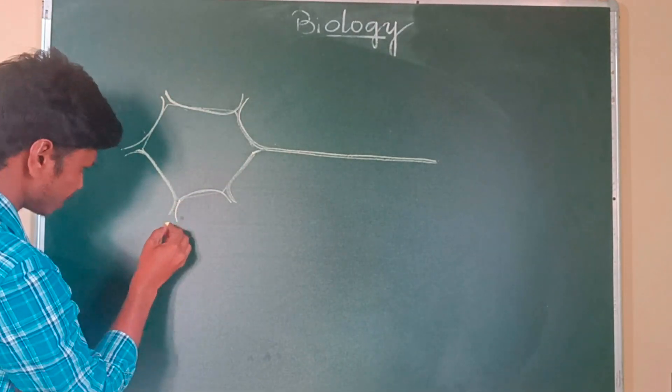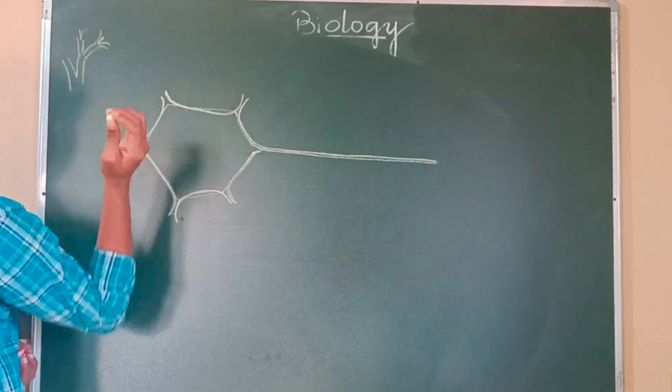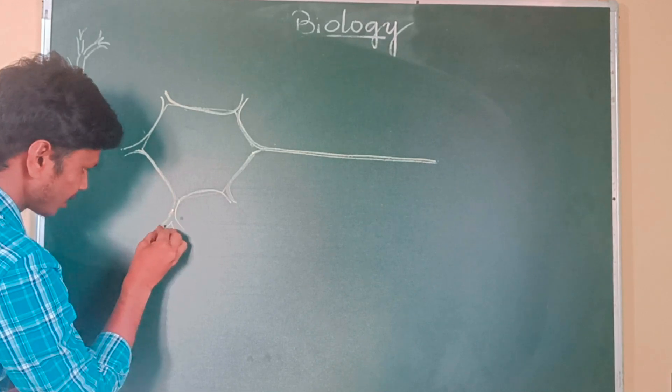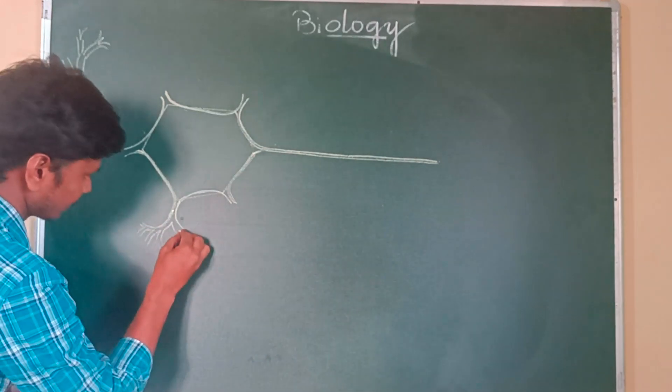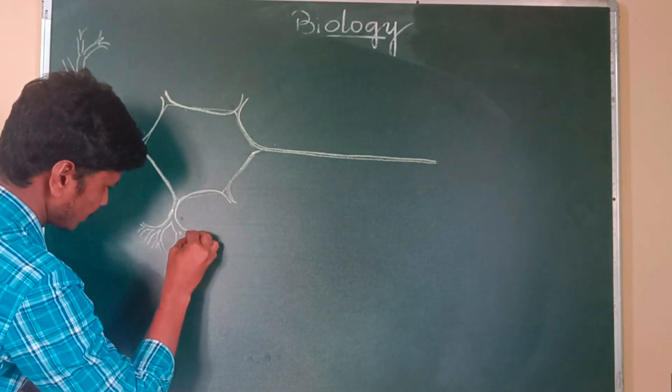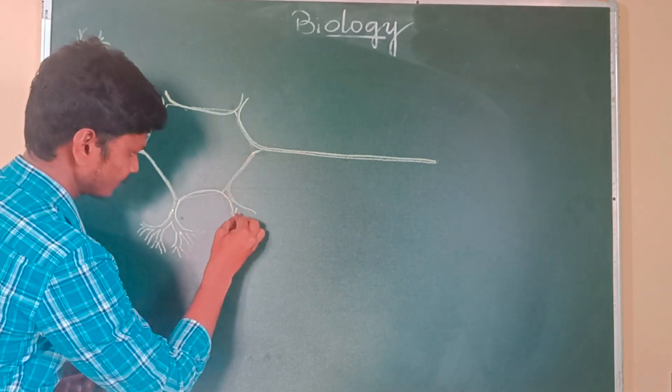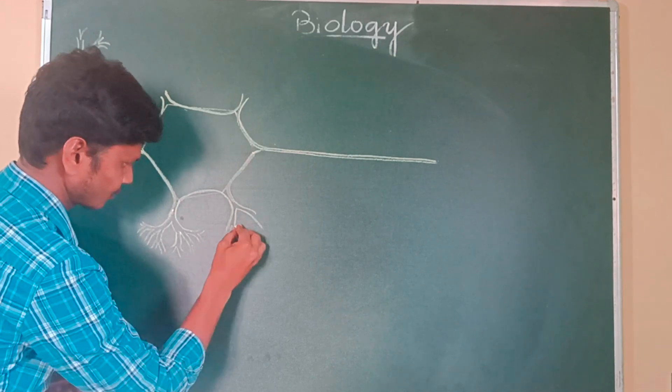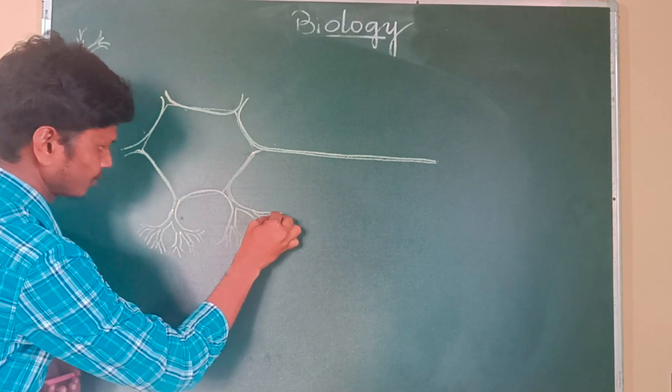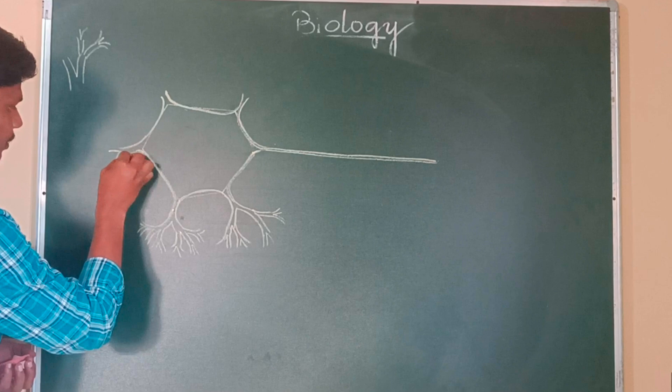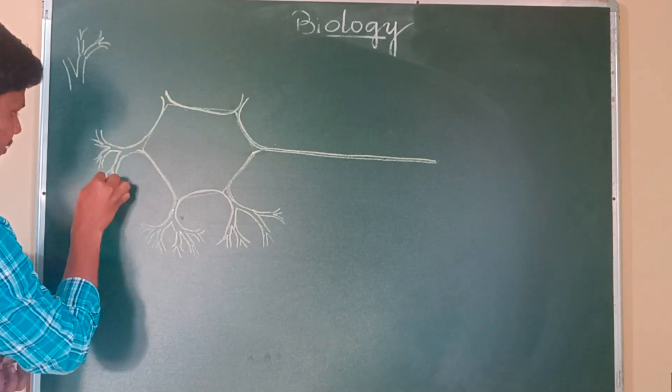See, it is very easy. Then you should write a straight line like this. Then dichotomous branching, you know. Dichotomous branching in the sense, like this - everywhere it should branch twice like this. See, here it is getting branched. These are called dendrites.